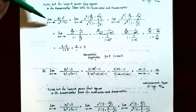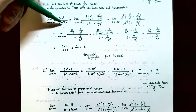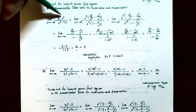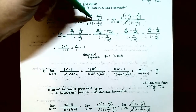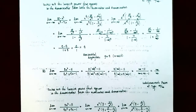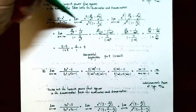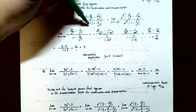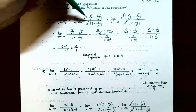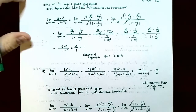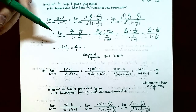Starting the problem over: the largest power in the denominator is x⁴. We factor out x⁴ from both numerator and denominator. From the numerator we get x⁴ times (25/x⁴ subtract 1/x²). From the denominator we get x⁴ times (1 subtract 7/x³). The x⁴ factors cancel, leaving us with the limit as x approaches negative infinity of (25/x⁴ subtract 1/x²) divided by (1 subtract 7/x³).